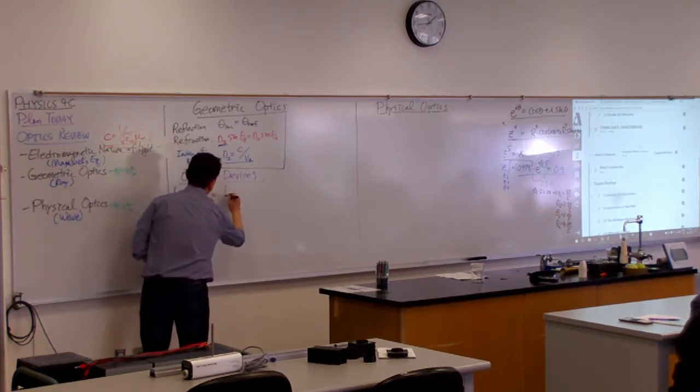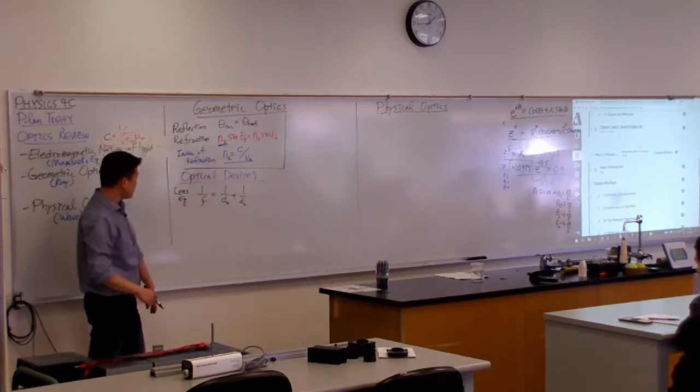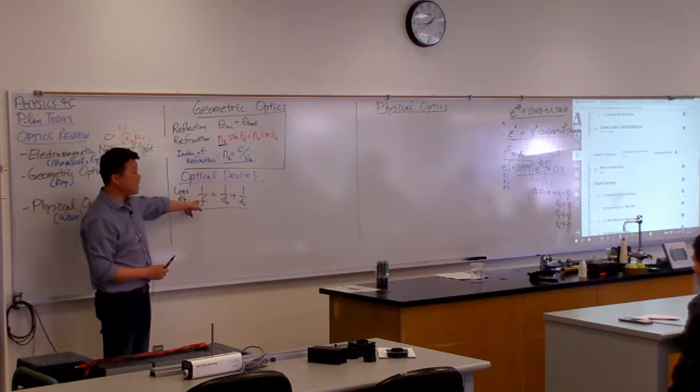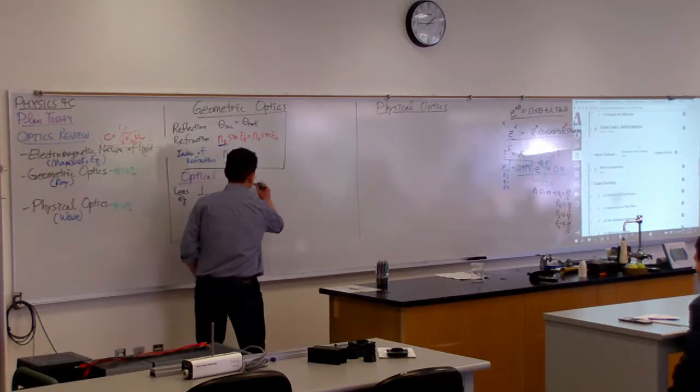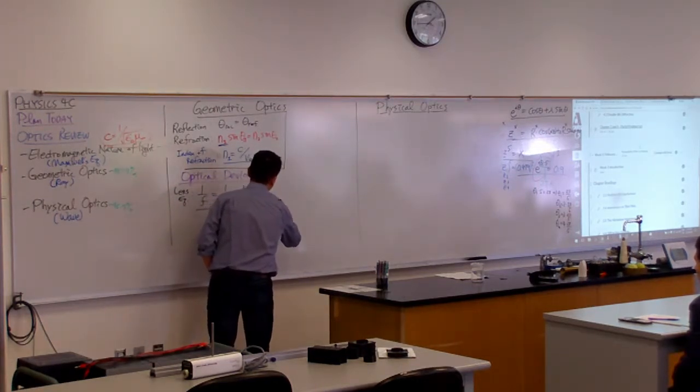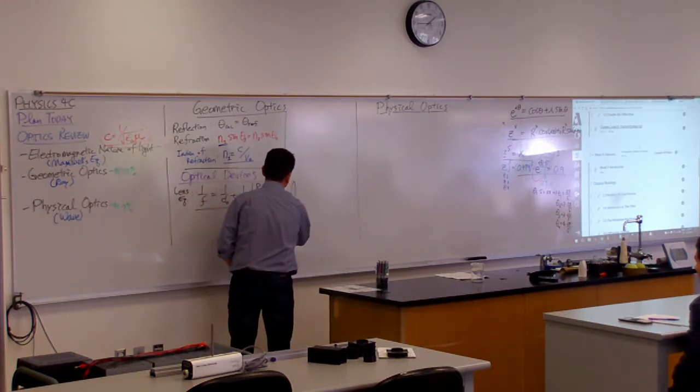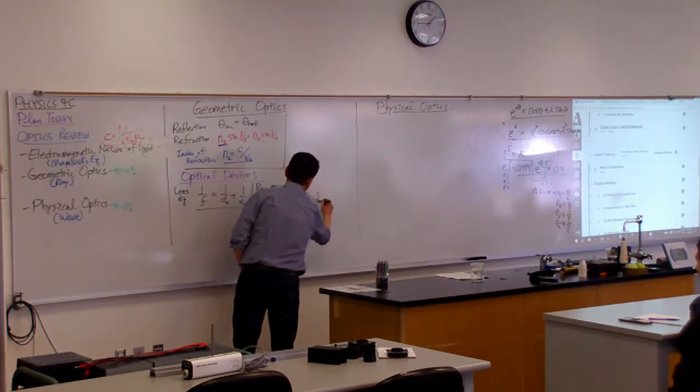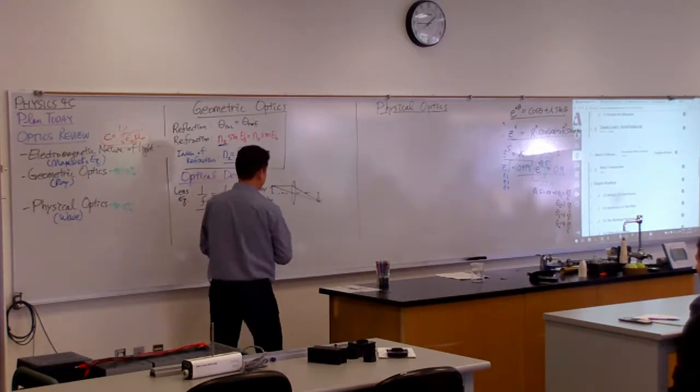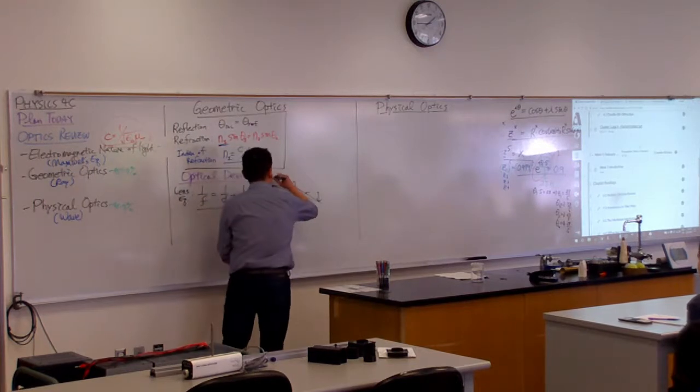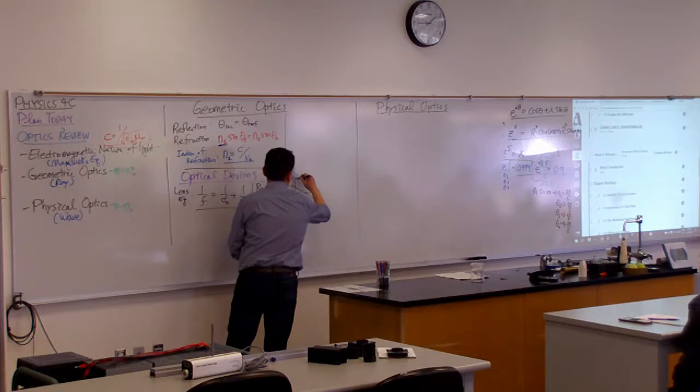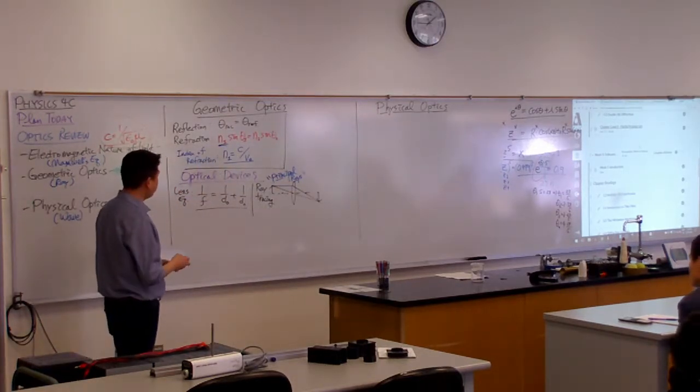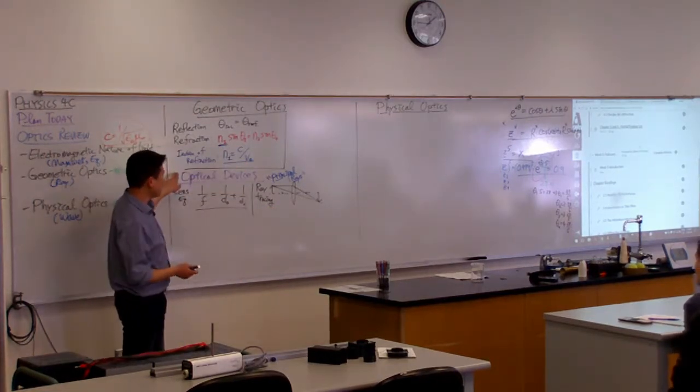Optical devices. And all of the expressions dealing with optical devices, the most important expression, number one expression is the lens equation. One over f is equal to one over dO plus one over dI. And coupled with this is a bit of ray tracing. So this algebraic equation actually carries the same information as a geometric ray diagram does. So you should remember the ray tracing rules.